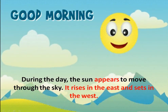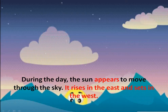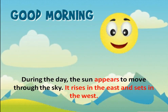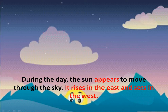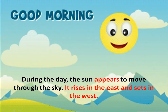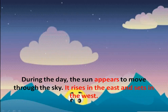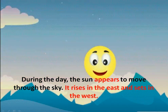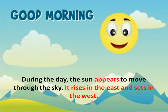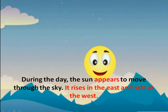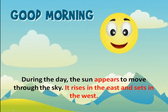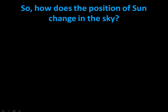During the day the sun appears to move through the sky. It rises from one point and then sets in another — it rises from the east and sets in the west. Then the question arises: how does the position of the sun change in the sky?